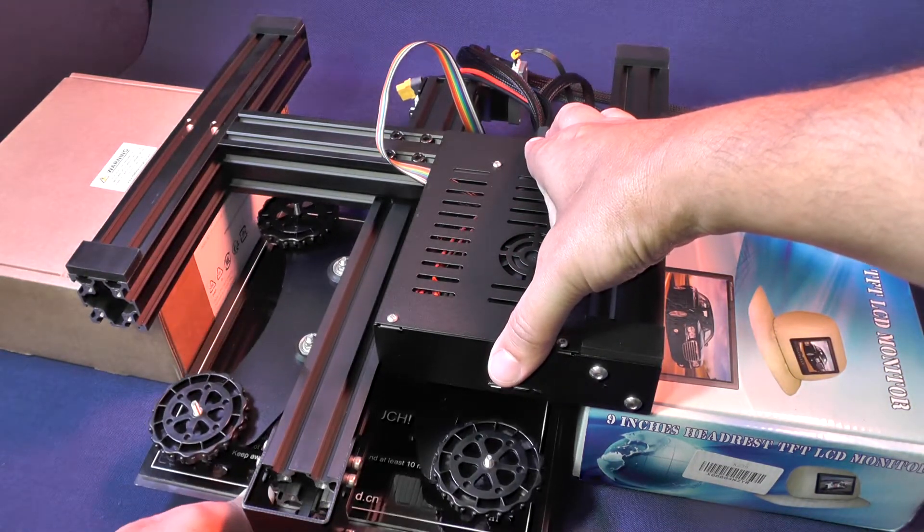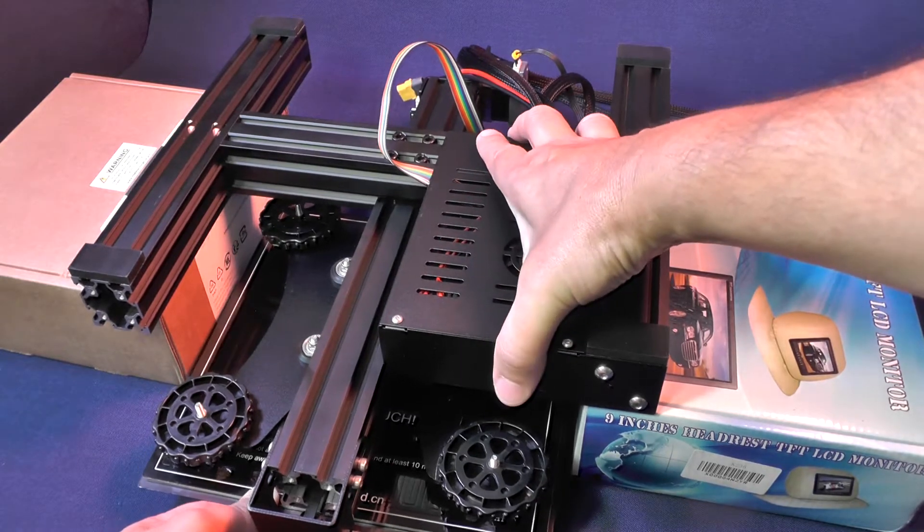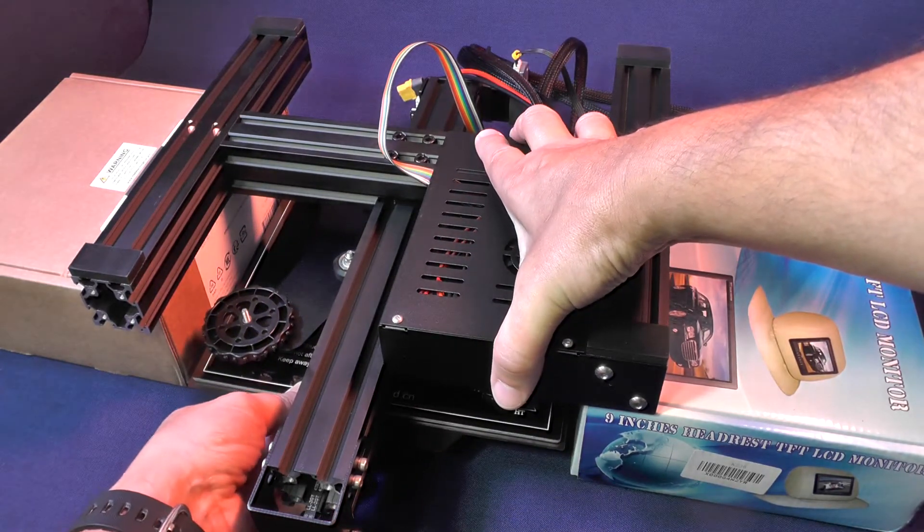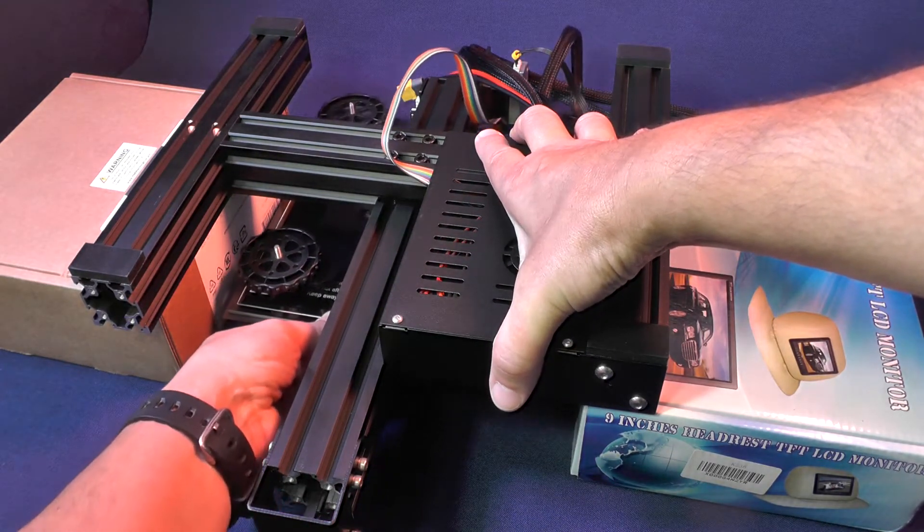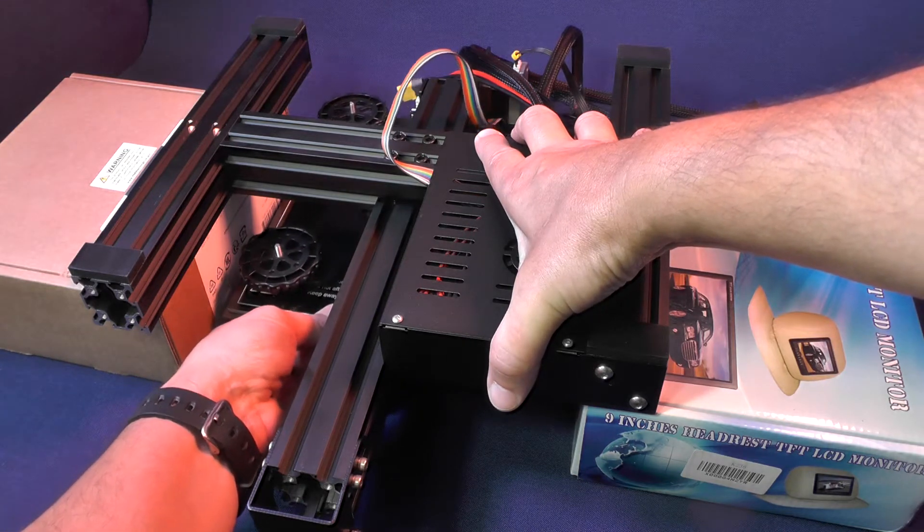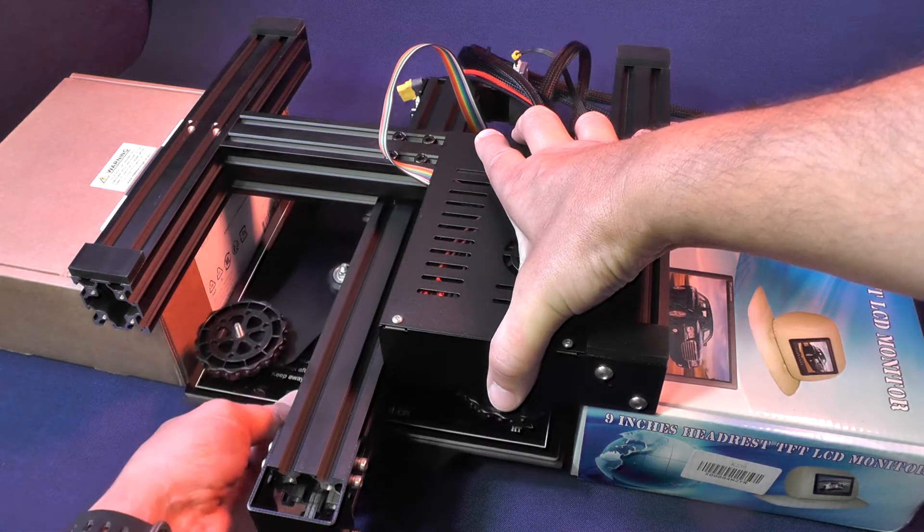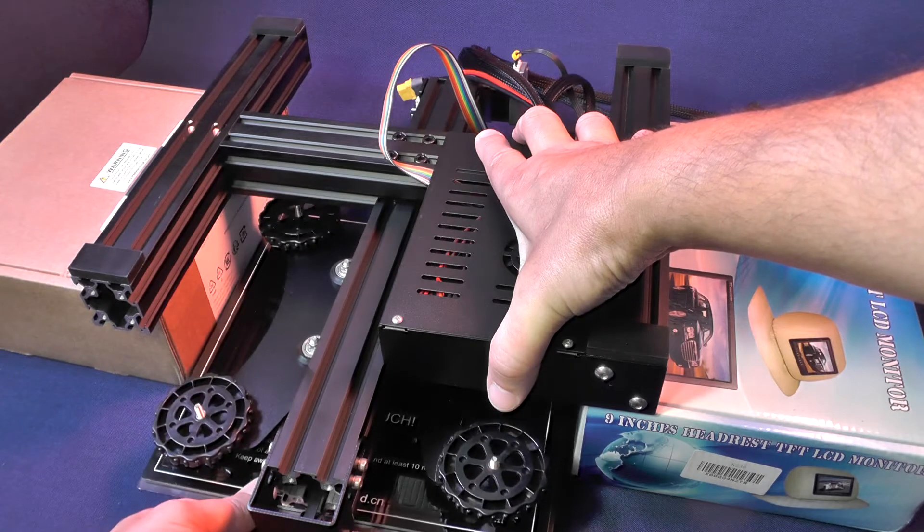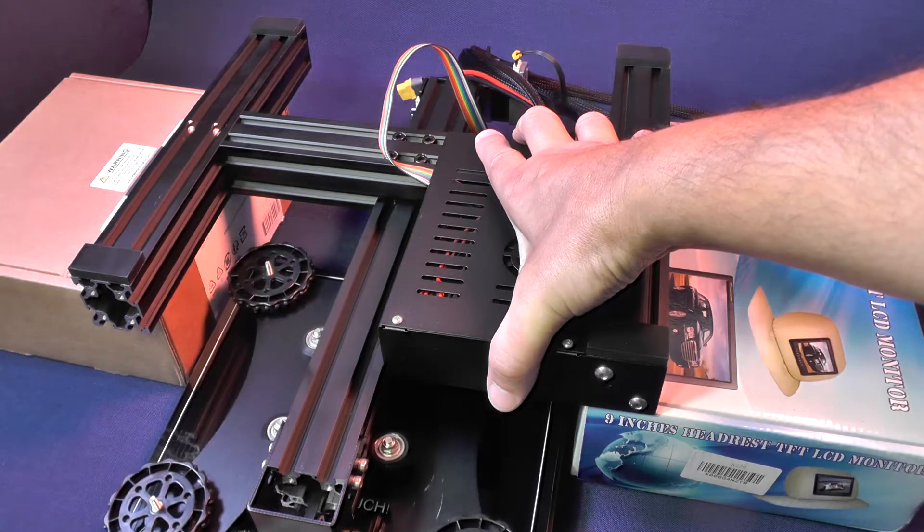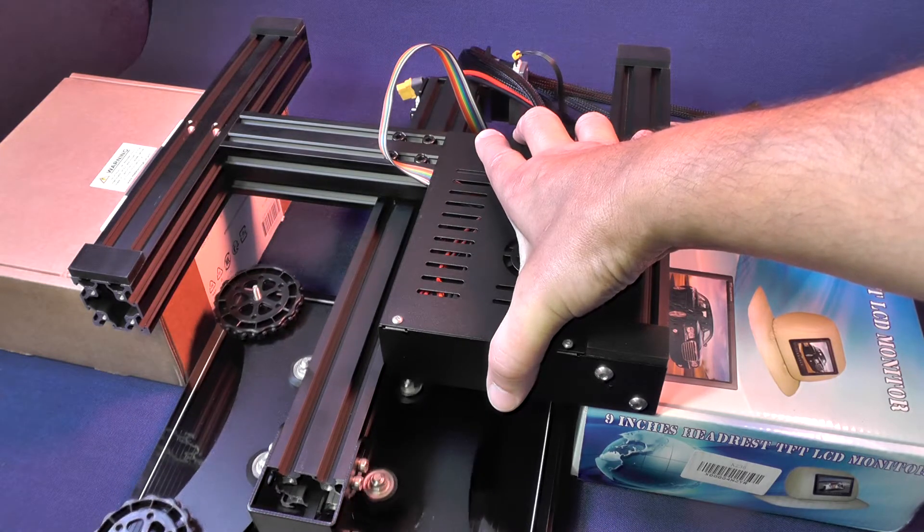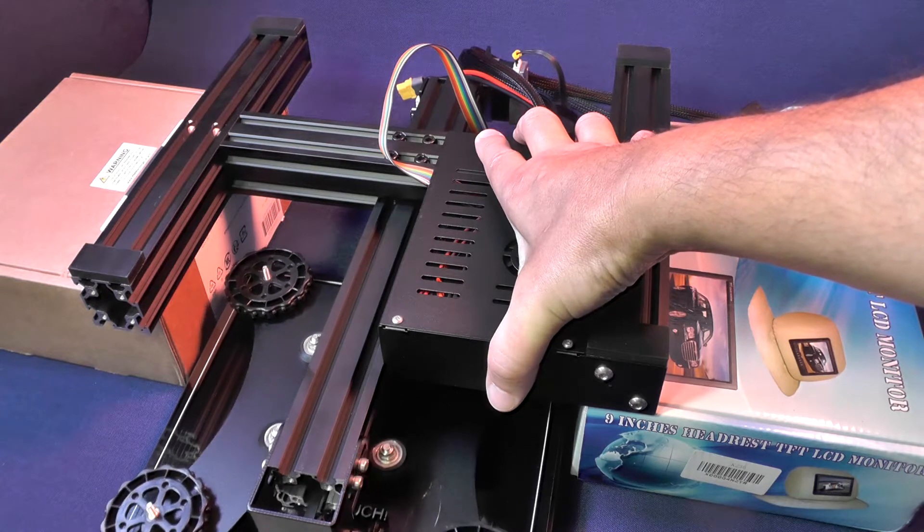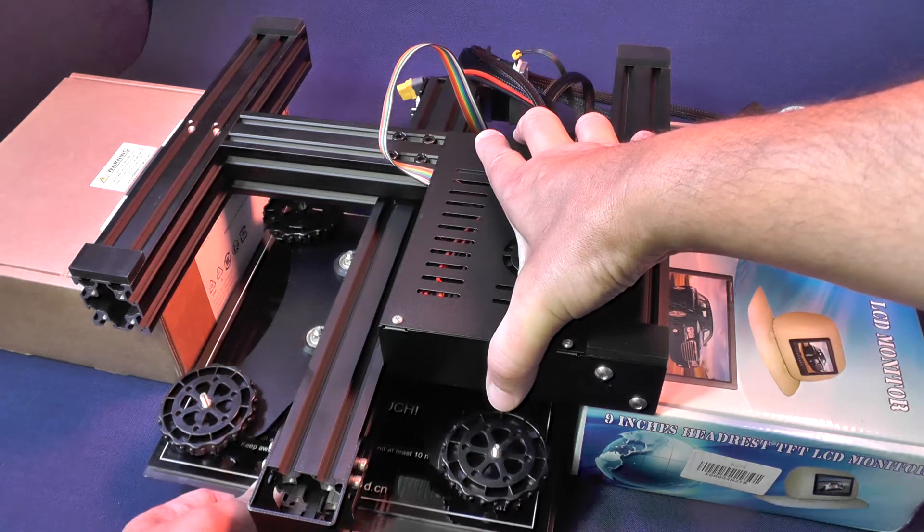In the case of my printer, these eccentric nuts came very poorly adjusted from factory. One of them came very tight, while the other one was completely loose. That caused an indentation on one of the wheels, which caused the carriage to abruptly stop every time it found that indentation. So, I need to address the problem.